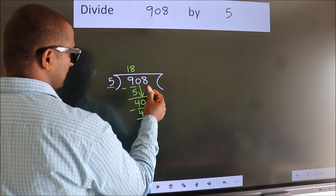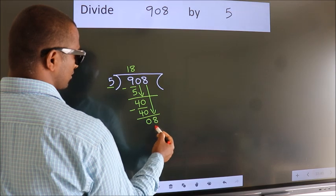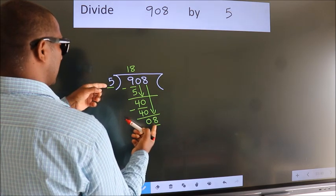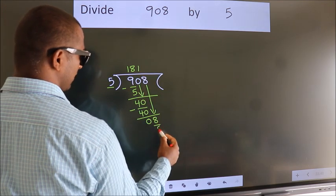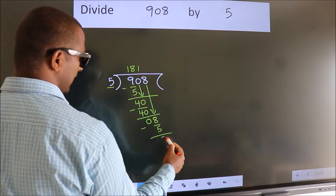After this, bring down the beside number. So, 8 down. So, 8. A number close to 8 in 5 table is 5 once 5. Now, we subtract. We get 3.